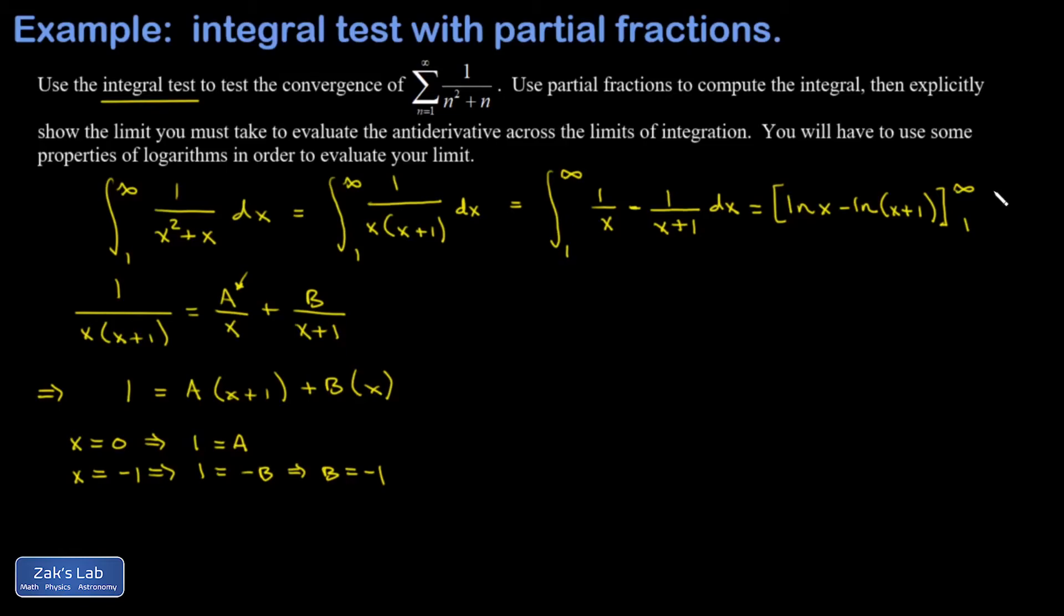I could write it this way: I'm evaluating natural log x minus natural log x plus one on the interval one to infinity. Now in a case where I could just sub in infinity and get an unambiguous answer that would be fine, but in this case that would give me the natural log of infinity minus natural log of infinity plus one, which is like an infinity minus infinity indeterminate form. So I'm going to be a little more formal with it and actually express that infinite limit as a limit.